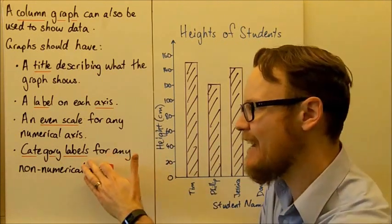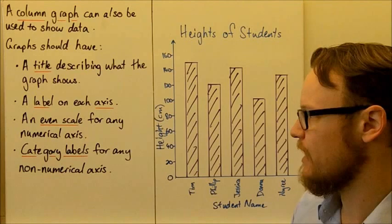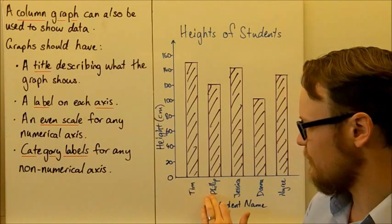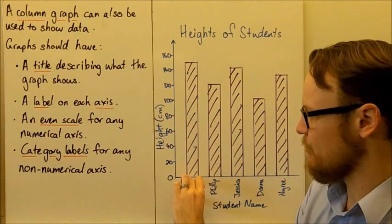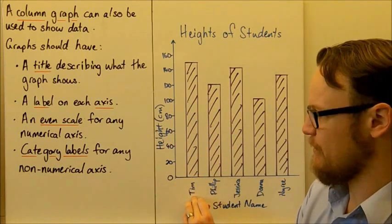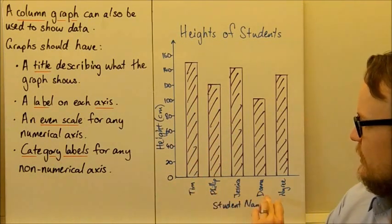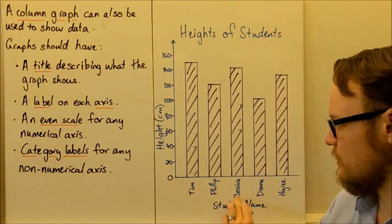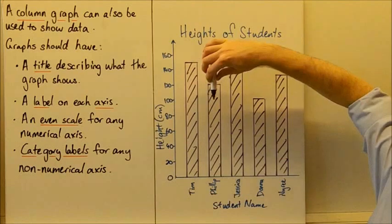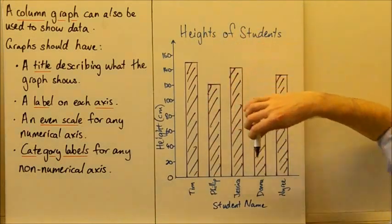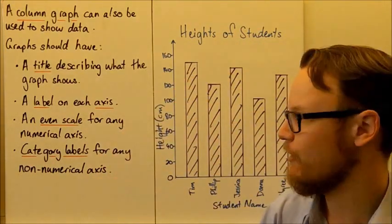We also need category labels for any non-numerical axis. So each of the labels that we have for each bar is called the category label. So our category label here is Tim, Phillip, Jessica, Donna, Nyreen. Each of these is a different category label that categorizes what each bar is showing for a non-numerical axis.